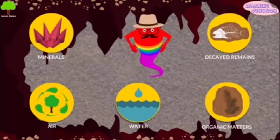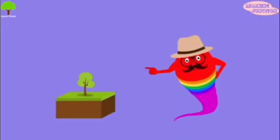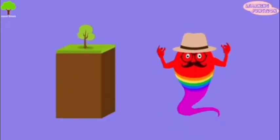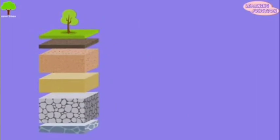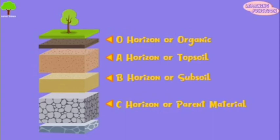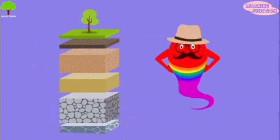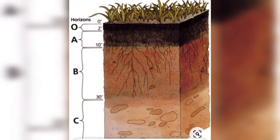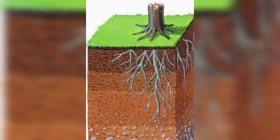Soil is found in layers which are arranged during the formation of soil. These layers are called horizons, and the sequence of layers is the soil profile. The layers of soil can easily be observed by their color and size of particles. The main layers of soil are topsoil, subsoil, and parent rocks.